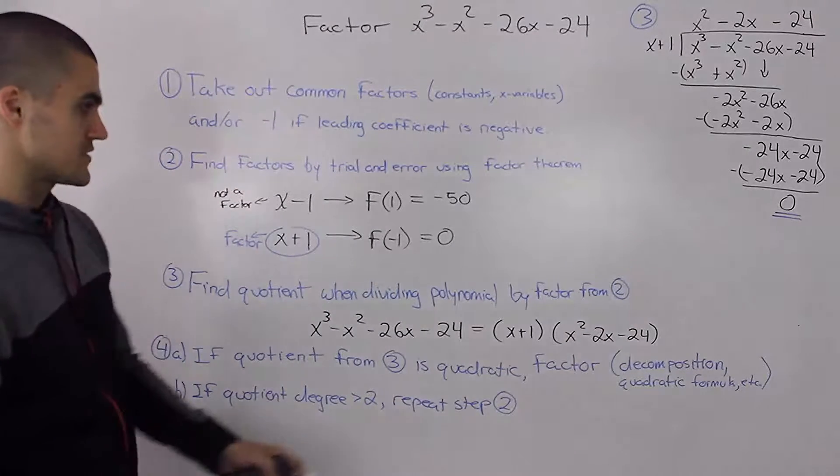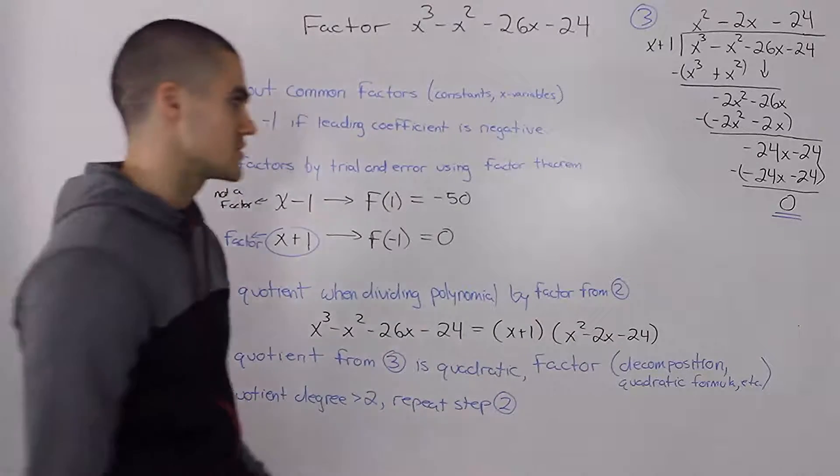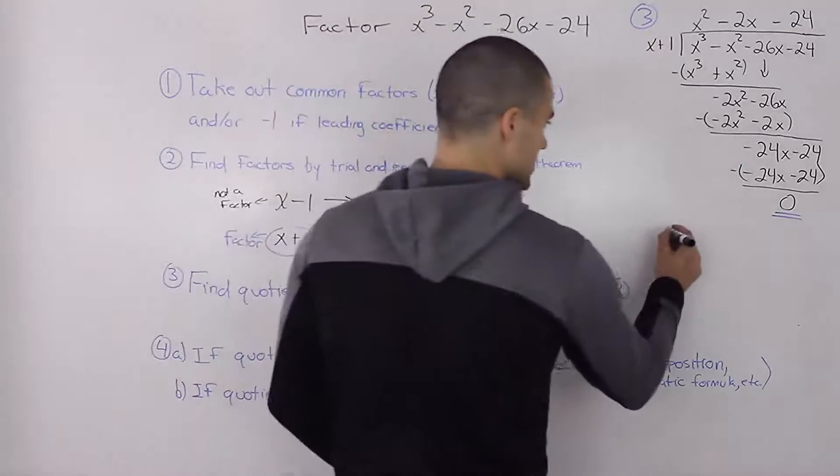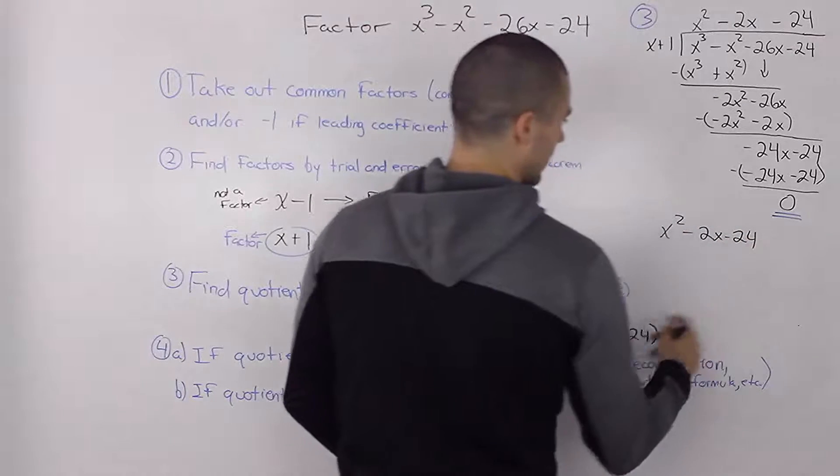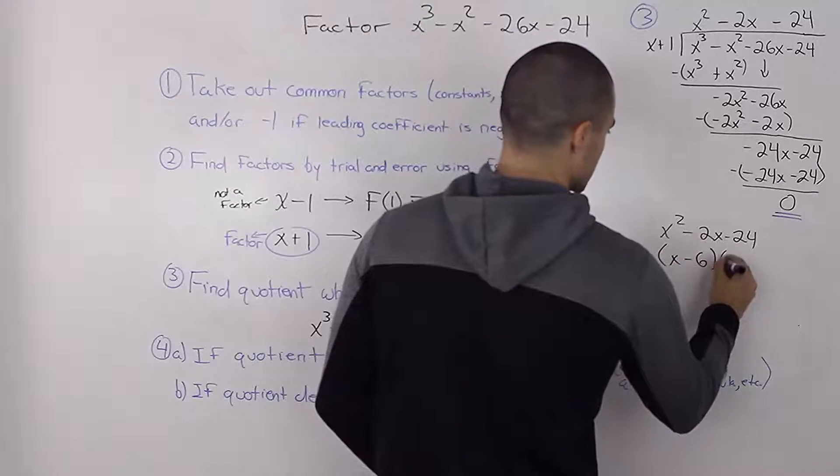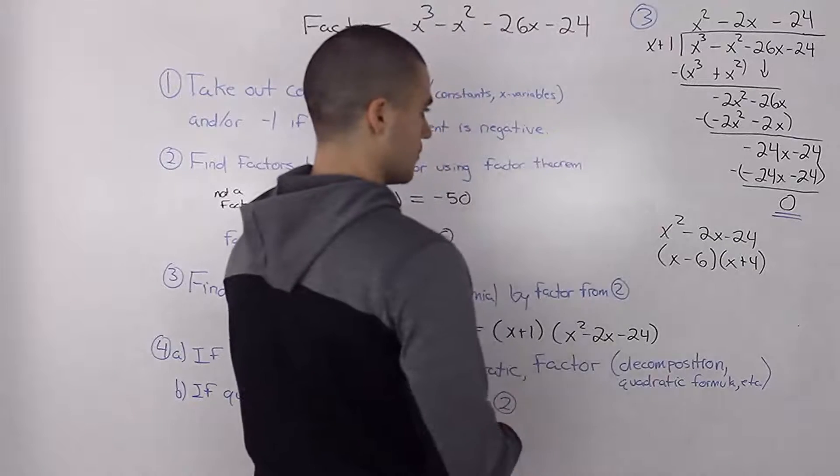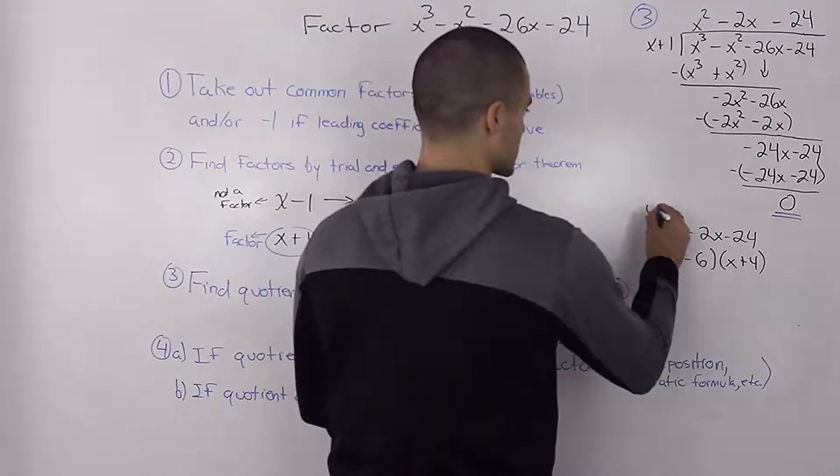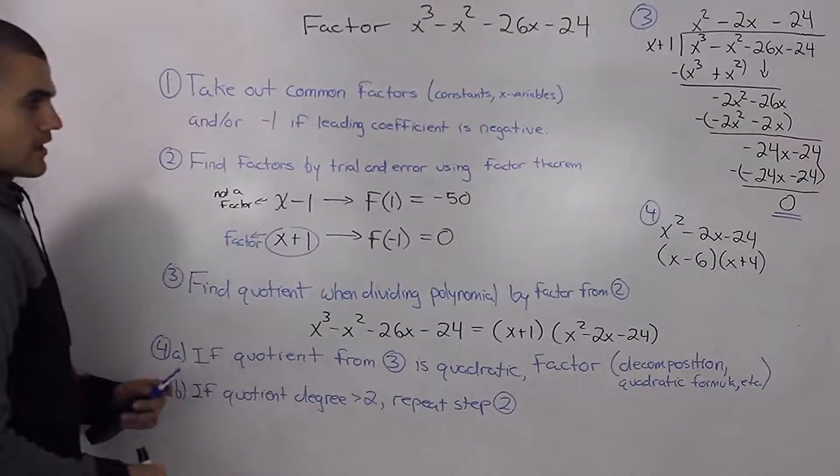So in our specific case the quotient that's remaining is a quadratic so we can just simply factor it. So let's do that on the side. So we got x squared minus 2x minus 24 and if we factor that using decomposition we would get x minus 6 times x plus 4. So this here on the side was step four and we're done.